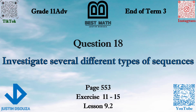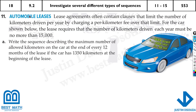In this question we will investigate different types of sequences. Here we have a real world problem about automobile leases. Lease agreements often contain clauses about the number of kilometers driven per year, charging a per-kilometer fee over that limit. For the car shown below, the lease requires that the number of kilometers driven each year must be no more than 15,000.